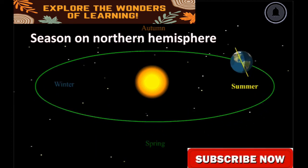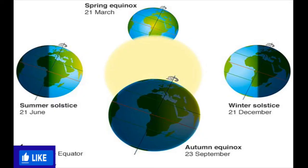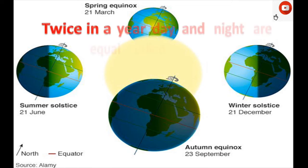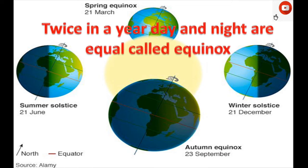Seasons on the northern hemisphere: twice a year, there are days in which day and night are equal, called equinox. Spring equinox occurs on 21st March, and autumn equinox on 23rd September. In these two days, day and night are equal.